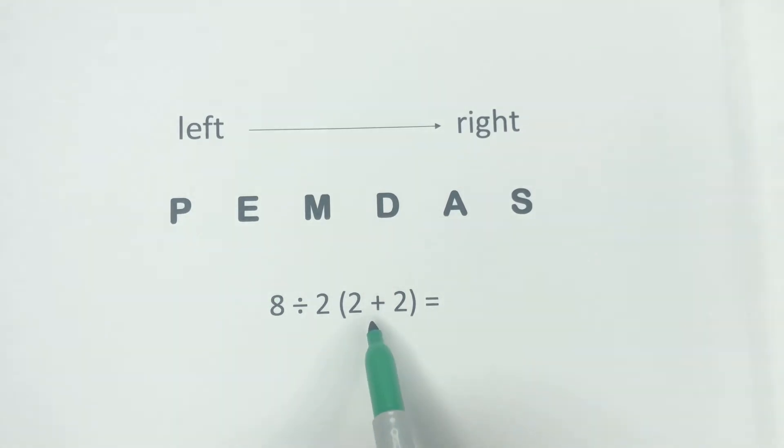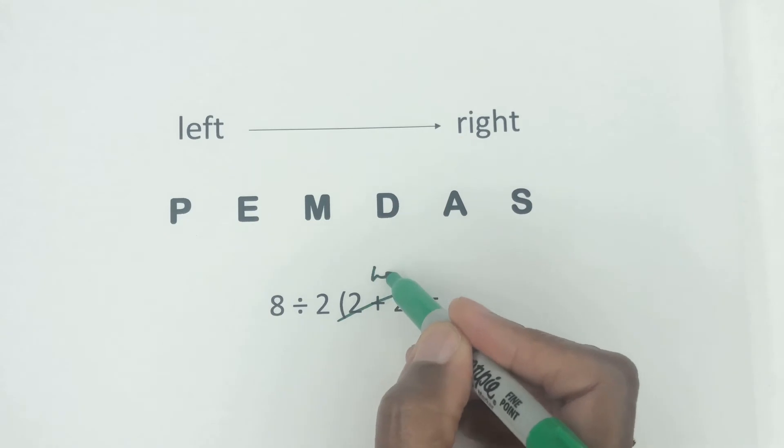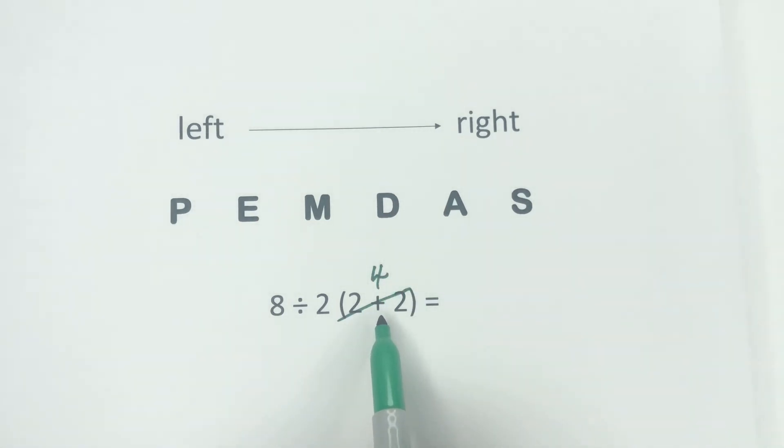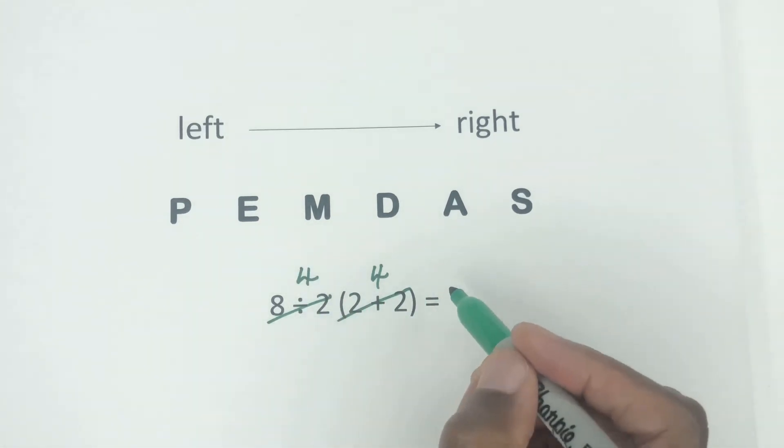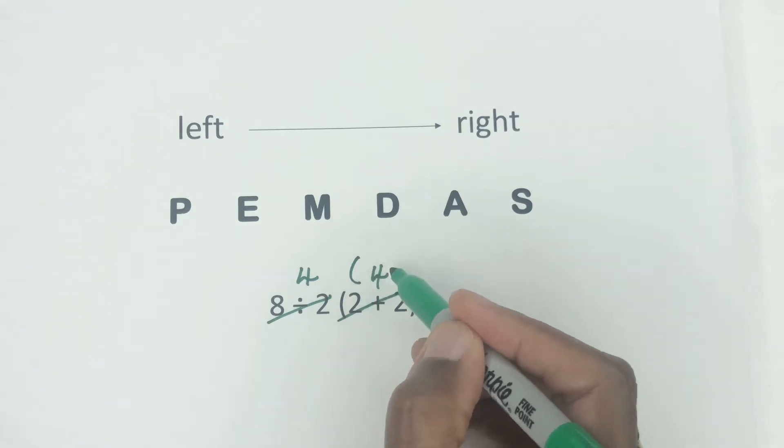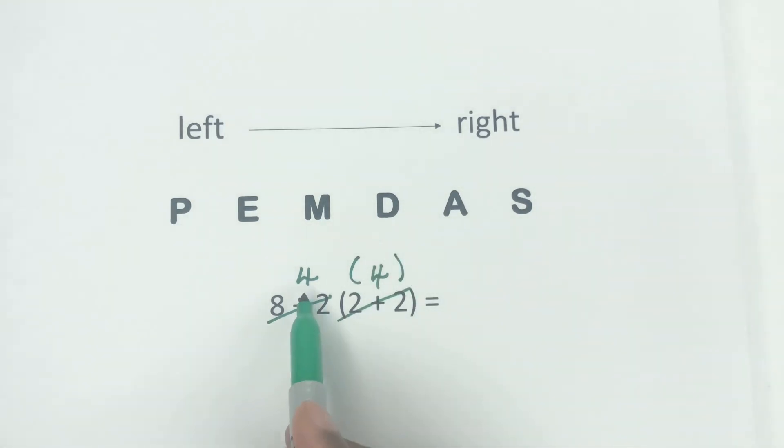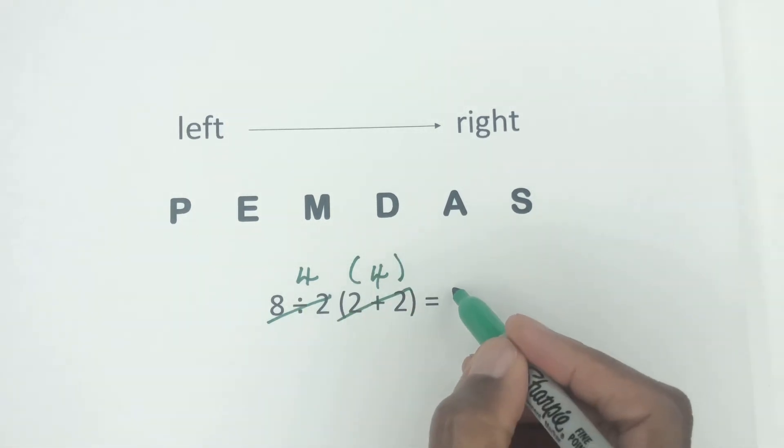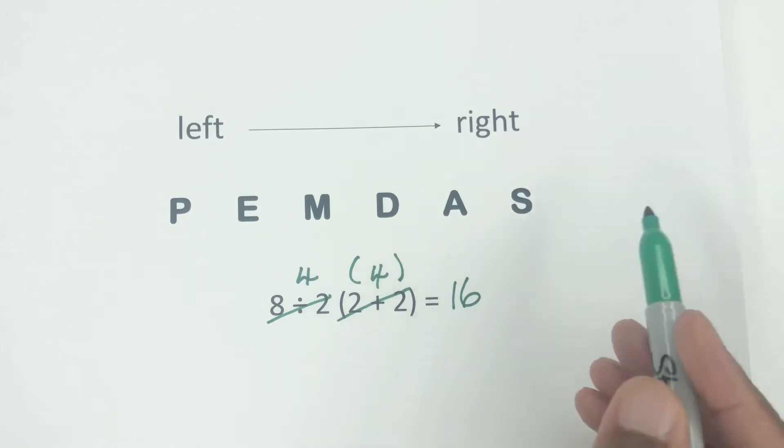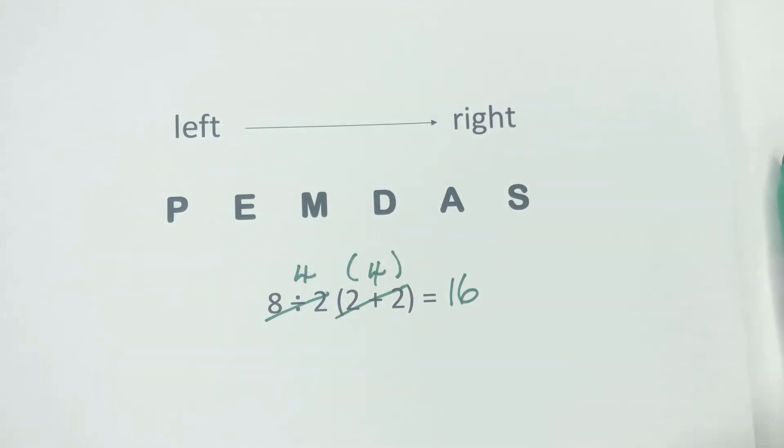So let me do one of those viral questions and settle this. Parenthesis is first, so you have 2 plus 2, so that is going to give us a 4. Then we have to go back to the left—this is where the problem lies. We go back to the left and then we say 8 divided by 2, which would give us a 4. And then 4 times this 4—and it's multiply because remember this would still be in the parenthesis here—so 4 times 4 would give us the 16.